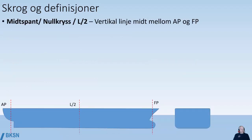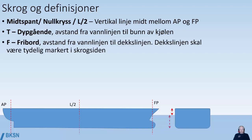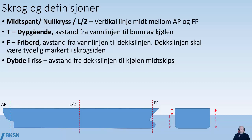Moving on, we have the center frame, which is a vertical line in the middle between the aft perpendicular and the forward perpendicular. T is an abbreviation for draft, which is the distance from the waterline to the bottom of the keel. F, freeboard, is the distance from the waterline to the deck line. The deck line is a line that should be clearly marked on the hull side. Molded draft is the distance from the deck line all the way down to the keel midships, and molded draft equals draft plus freeboard.